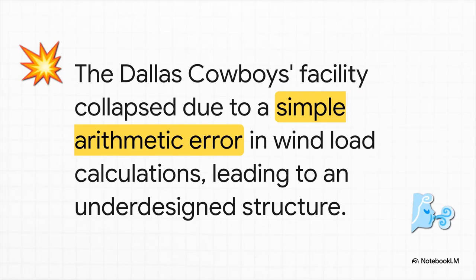But what happens when those calculations go wrong? Well, the stakes are unbelievably high. Take this. Back in 2009, the Dallas Cowboys' entire training facility just collapsed right in the middle of a storm. And when they investigated, they found it was all because of a simple arithmetic error in the design calculations for wind. That, plus a few other careless mistakes, meant the building was just not designed to handle the real world. And it failed.